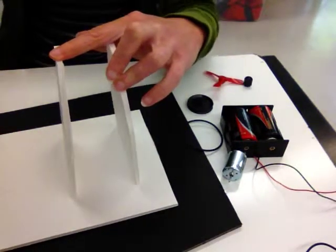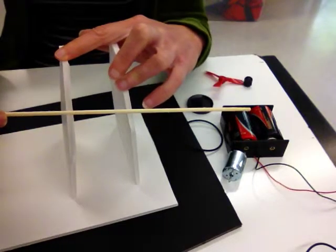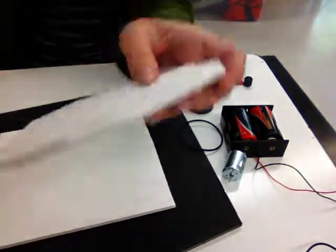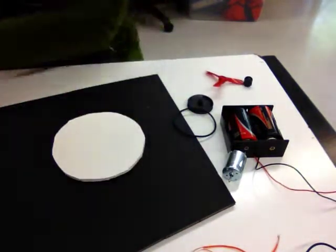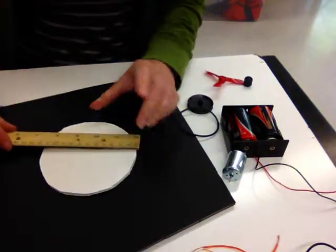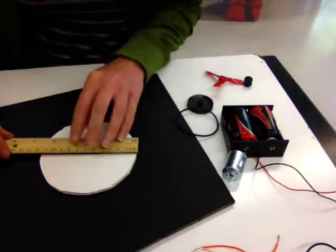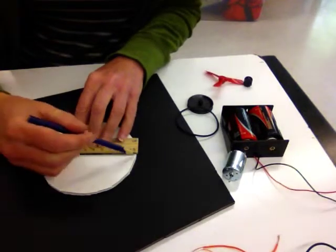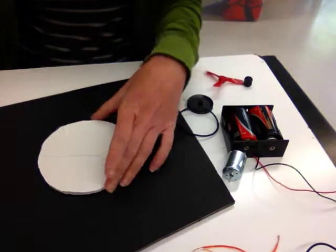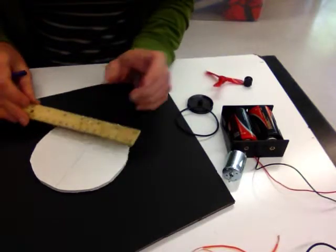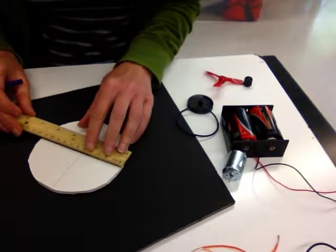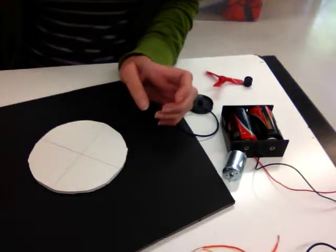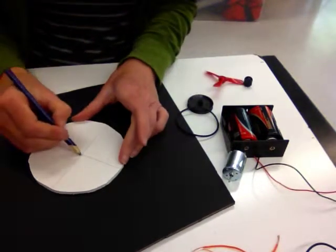And then you're going to need to use an axle. I use a skewer like this. You need to find the center of your disc. The best way to do that is to measure the widest point. Mine's about 11 and a half centimeters. Mark it, and then the other way across. That's the central point here.